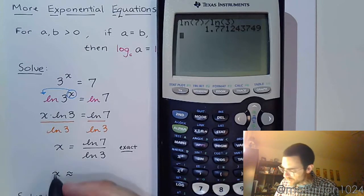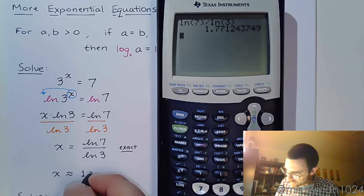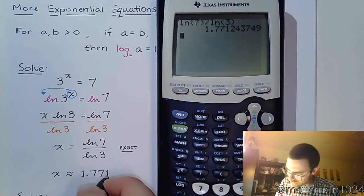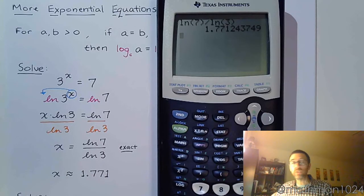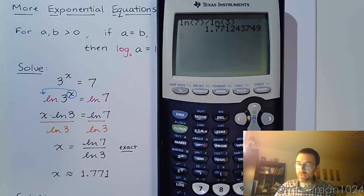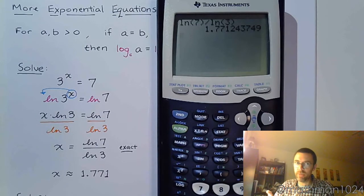So we get that x is approximately 1.771. But let's check this, right? It's very easy to make mistakes, and believe me, I know about making mistakes.